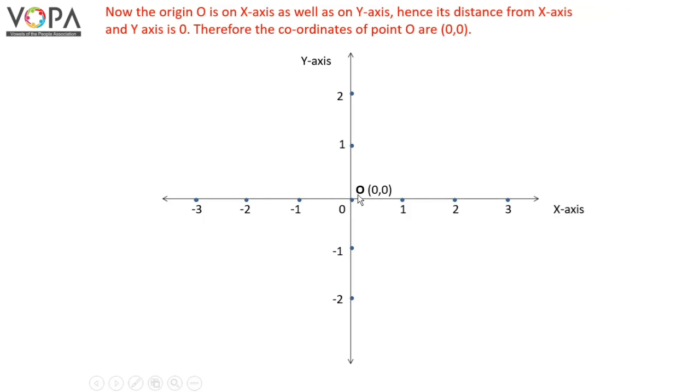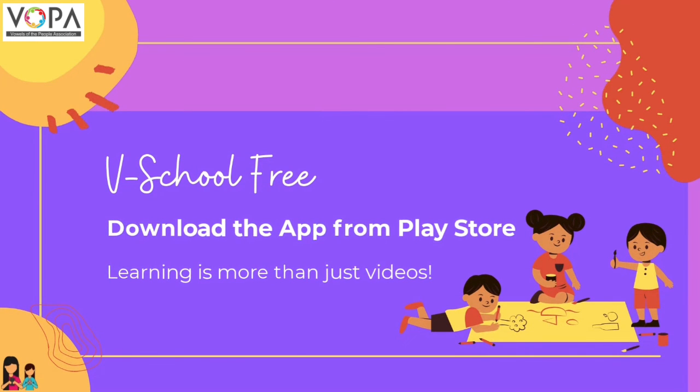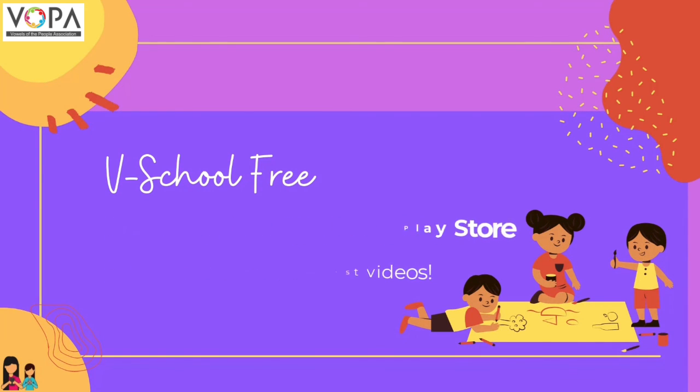Here there is the origin O. Origin O is on the x-axis as well as on the y-axis, hence its distance from the x-axis is 0, and its distance from the y-axis is 0. Therefore, the coordinates of point O are (0, 0).